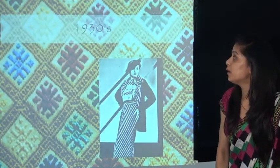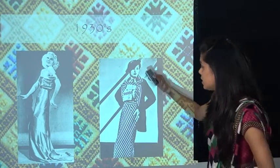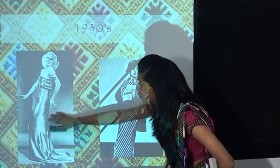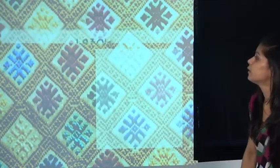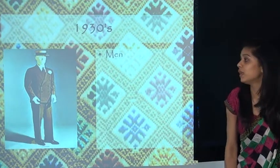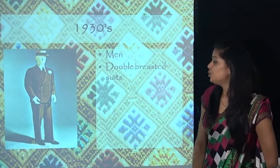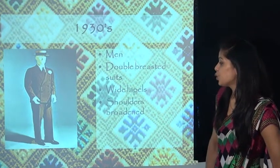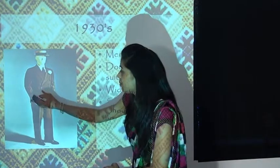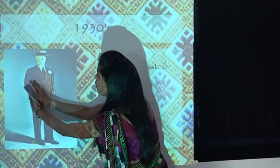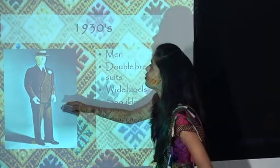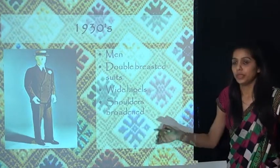The cowl neck neckline was widely followed by people in the 1930s. We can also see this dress — a tunic style in a totally satin gown. For men in the 1930s, double-breasted suits with wide lapels and broadened shoulders were in trend. We can see in this image the coat with wide overlapping — this kind of coat was very trendy at that time.